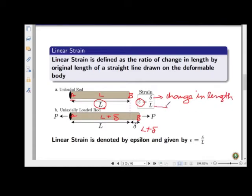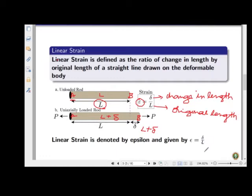So the formula is: strain epsilon = delta / L, where delta is the change in length (L_final minus L_initial) and L is the original length. This is the definition of linear strain.